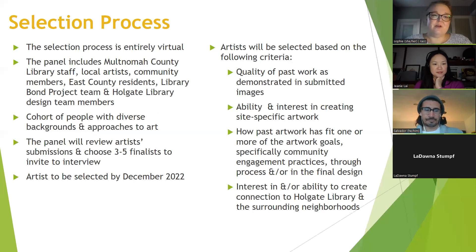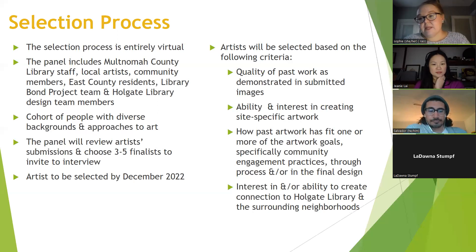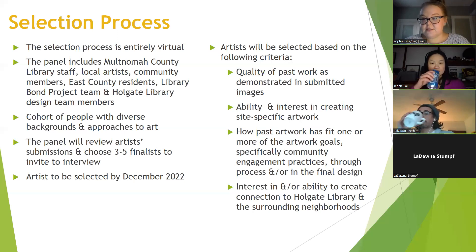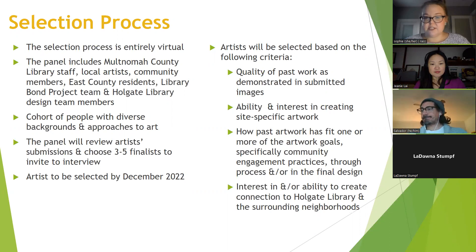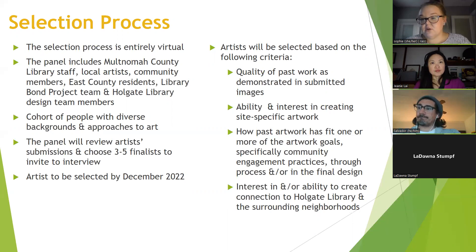The selection process is entirely virtual. The panel includes representatives from Multnomah County Library, local artists, community members, East County residents, library bond team members, and the design team. The panel will review submissions and choose three to five finalists to invite to interview. We hope to have an artist selected by December. Selection criteria include: quality of past work, ability and interest in creating site-specific artwork, how past work fits the artwork goals especially community engagement, and connection to Holgate Library and surrounding neighborhoods.